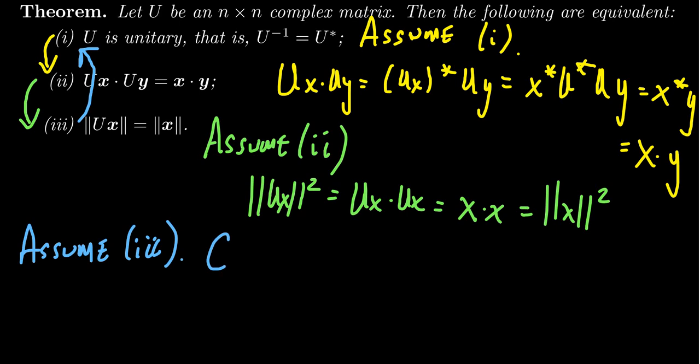And I want us to consider the matrix U star U. Which at the moment, the only thing we know about U, because we're assuming only three, is that the length of Ux is the same as the length of x for any vector x. That's what we know. So we don't know that U is unitary. We're trying to prove that.